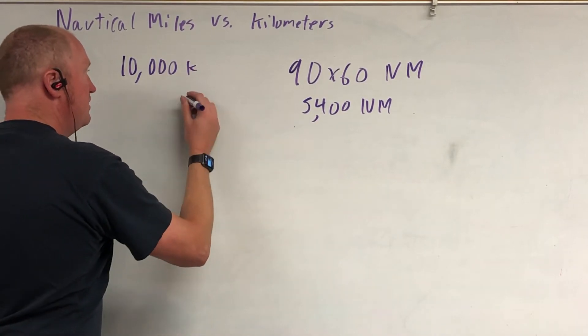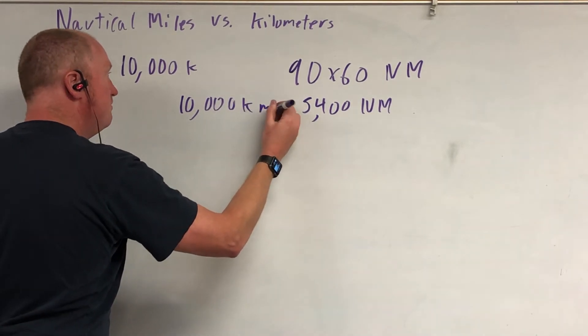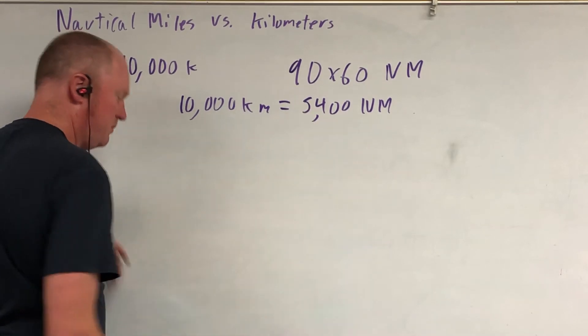As a result, 10,000 kilometers is now equal to 5,400 nautical miles.